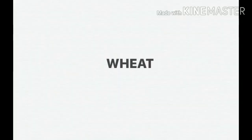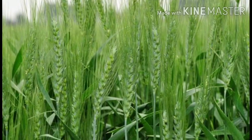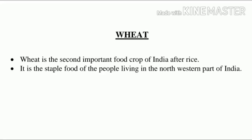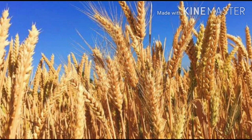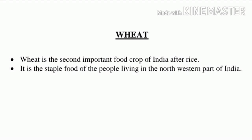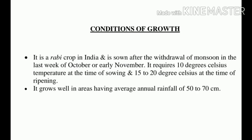Wheat is the second important food crop of India after rice. India is the fourth largest producer of wheat in the world and contributes about 8% of the world's wheat. It is the staple food of the people living in the northwestern part of India. It is a Rabi crop in India and is sown after the withdrawal of monsoon in the last week of October or early November. Some quick-ripening, high-yielding varieties of seeds are sown as late as December or early January. It requires 10 degrees Celsius temperature at the time of sowing and 15 to 20 degrees Celsius at the time of ripening. It grows well in areas having average annual rainfall of 50 to 70 centimeters.